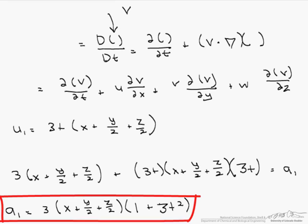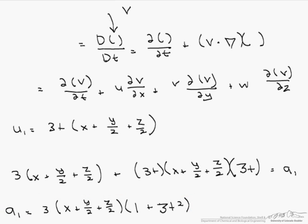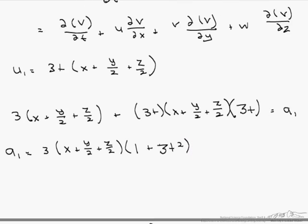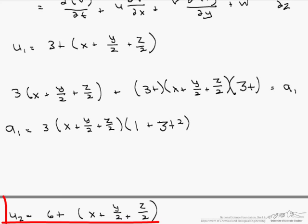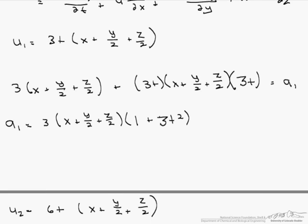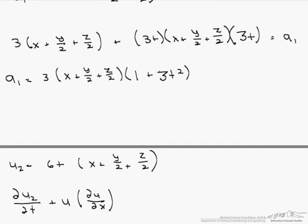Let's do the same thing for our second velocity. Our velocity is given as 6t times (x plus y/2 plus z/2), and again we need to find the derivative of u with respect to t plus u times du/dx.